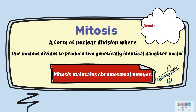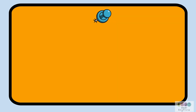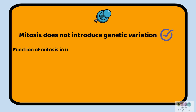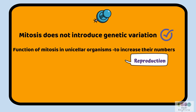Therefore, you could say that mitosis retains genetic code. Let's write some key points on mitosis. Mitosis does not introduce genetic variation — that's very important to consider. The function of mitosis in unicellular organisms is to increase their numbers, so it's a means of asexual reproduction.